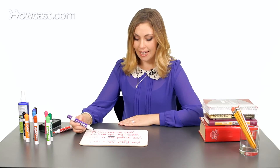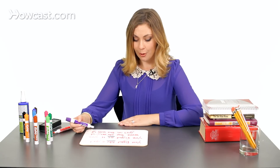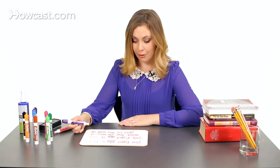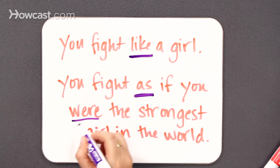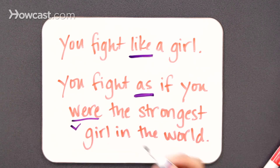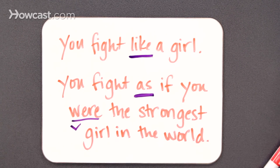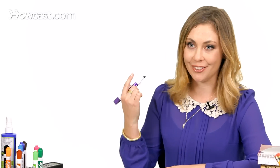That holds true in this example: 'you fight as if you were the strongest girl in the world.' Here, were is our verb. So if you have a sentence like this and you're trying to fill in the blank with like or as, remember that little tip.